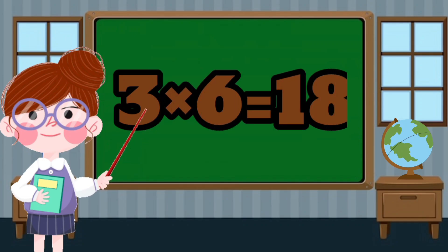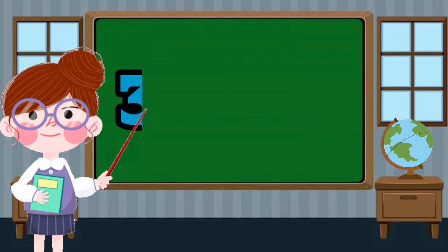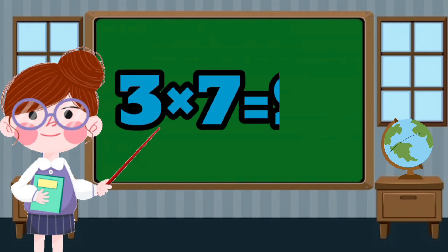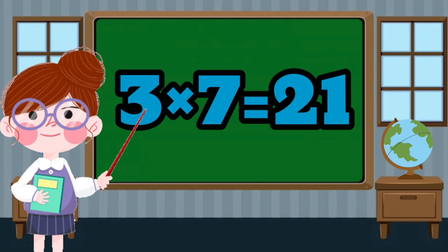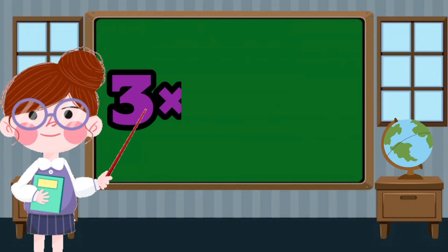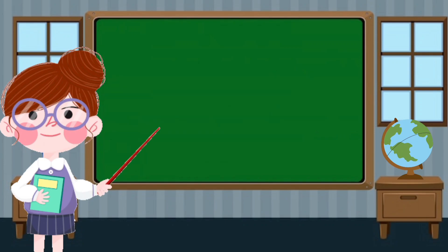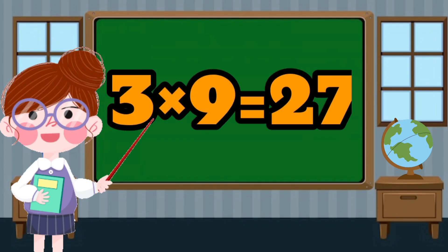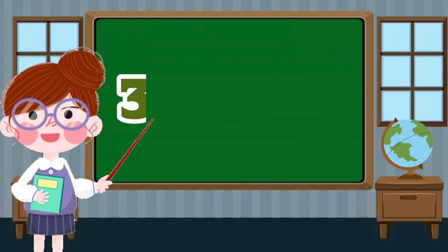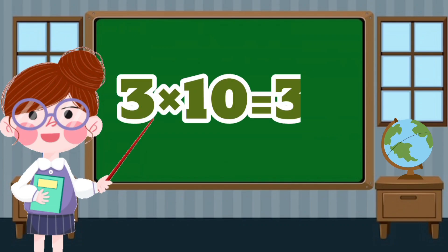3 x 6 equals 18. 3 x 7 equals 21. 3 x 8 equals 24. 3 x 9 equals 27. 3 x 10 equals 30.